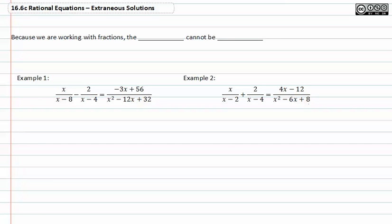Occasionally, when working with rational equations, you'll end up with something called an extraneous solution. Because we're working with fractions, the denominator cannot be zero.